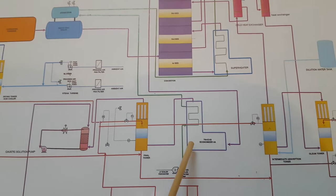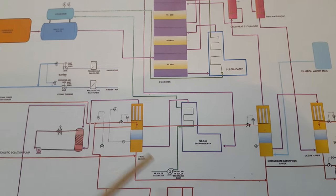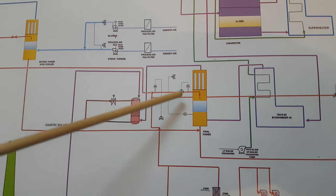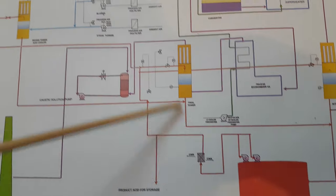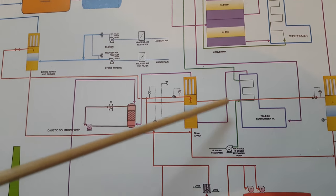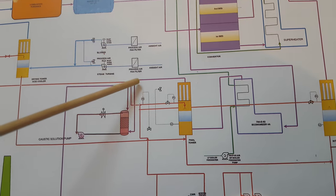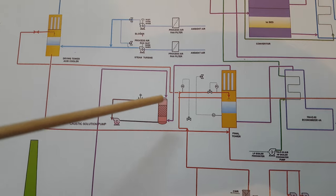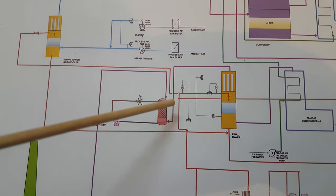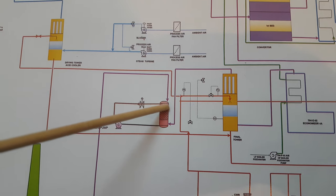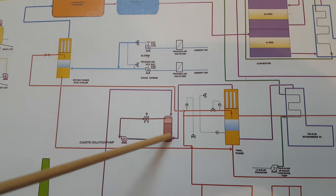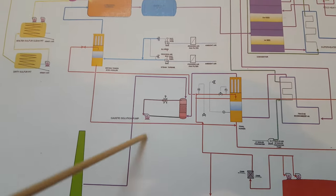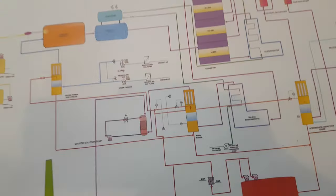From here gas also goes to the intermediate absorption tower, where acid is sprayed from the top and gas contacts the acid. This is the economizer which preheats the boiler feed water going to the steam drum. This is the final absorption tower, where sulfuric acid is circulated from the top and gas goes from the bottom, reacting to become sulfuric acid. This is the scrubbing tower, where caustic solution is used — gas goes from the bottom and caustic solution scrubs the gas from the top, neutralizing it, and the process gas goes to the stack.